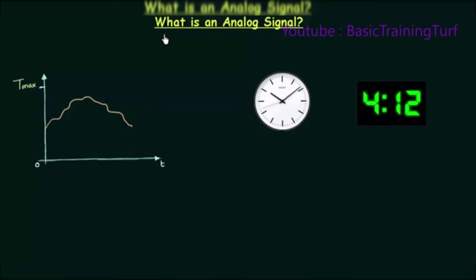In the last presentation we completed the introduction of signals, and I gave you one example measuring temperature from 9am to 9pm. In electrical and electronics, the signal is nothing special but the change in current and voltage with time. In this presentation we will move forward with signals.